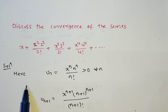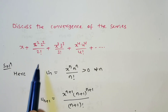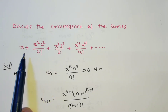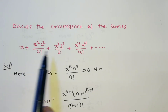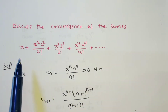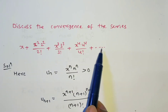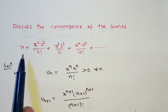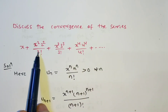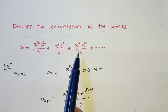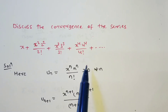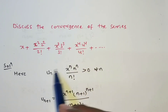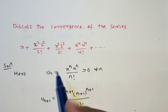Here they are given the sum of terms. They are not given the nth term directly — they are given 4 terms: 1, 2, 3, 4. So we need to write the nth term.